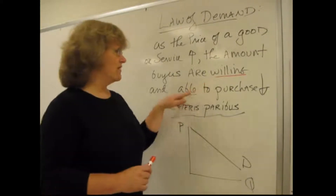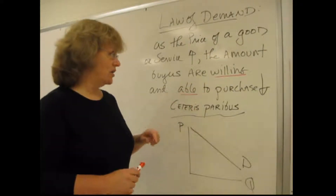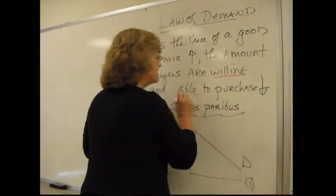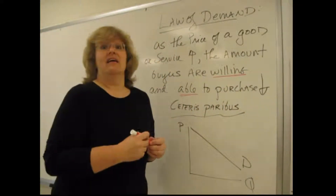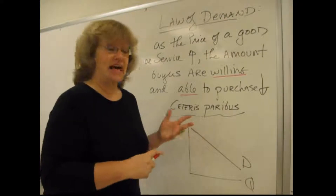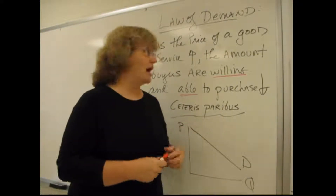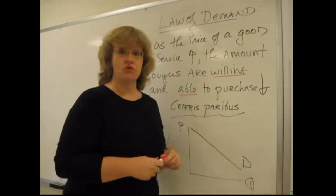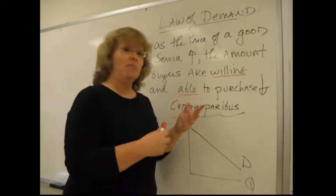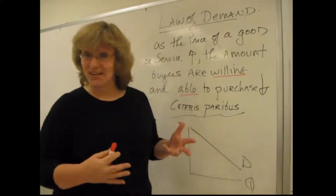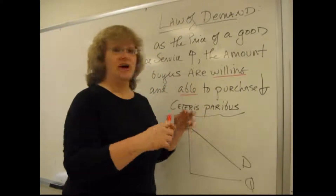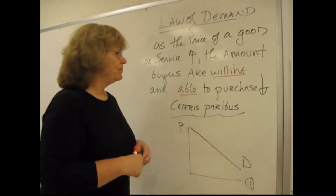The first thing to note are the words that I've got underlined here: willing and able. To be considered part of the demand for anything, you have to be both willing and able to purchase that good. Just as an example, I am willing to purchase a Lamborghini, but I'm not able. I am able to purchase tofu, but I'm not willing. To be in the demand for any good or service, you have to be both willing and able.